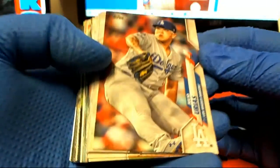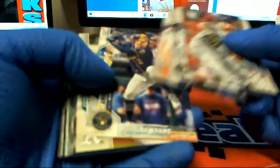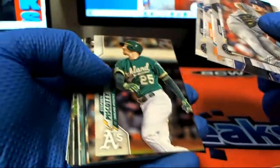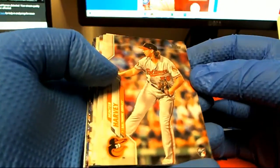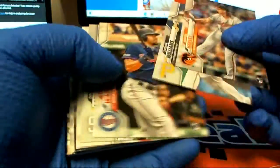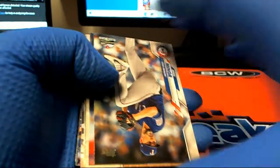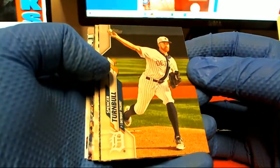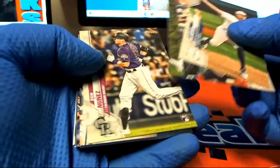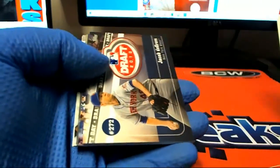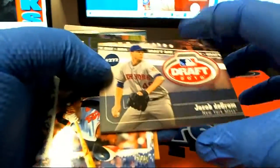There's your Rice. Hunter Harvey. Turnbull. Oh we got a draft card right here, nice. Jacob DeGrom 2010 draft day.